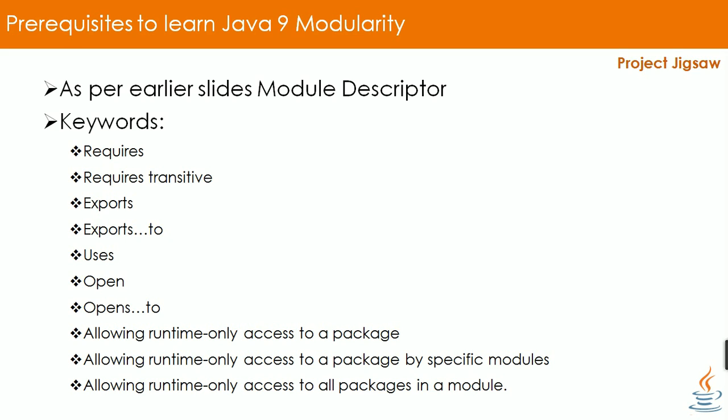The next keyword is uses. A uses module directive specifies a service used by this module. The next keyword is open. An open package indicates that a specific package's public types — including nested public and protected types — are accessible to code in other modules at runtime only.